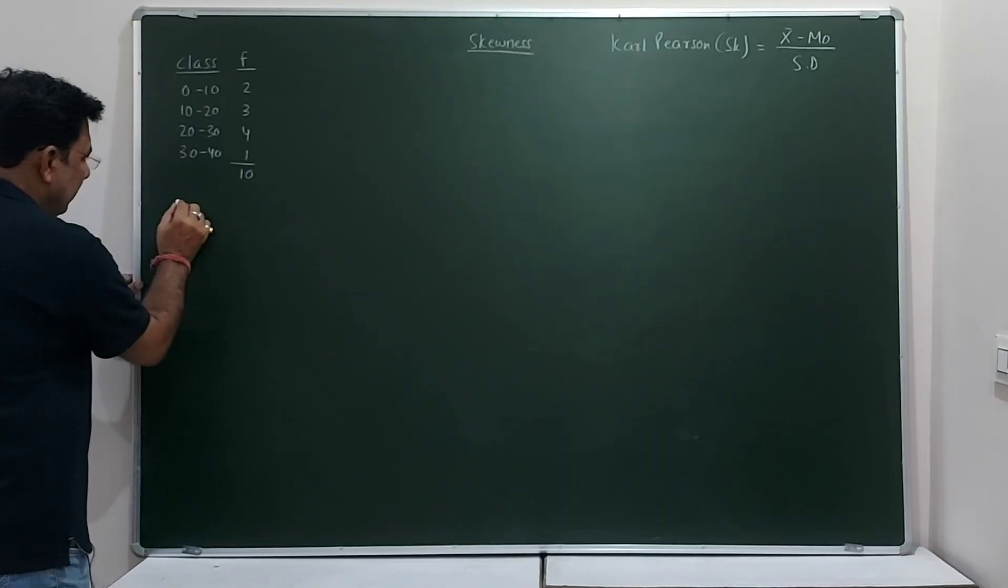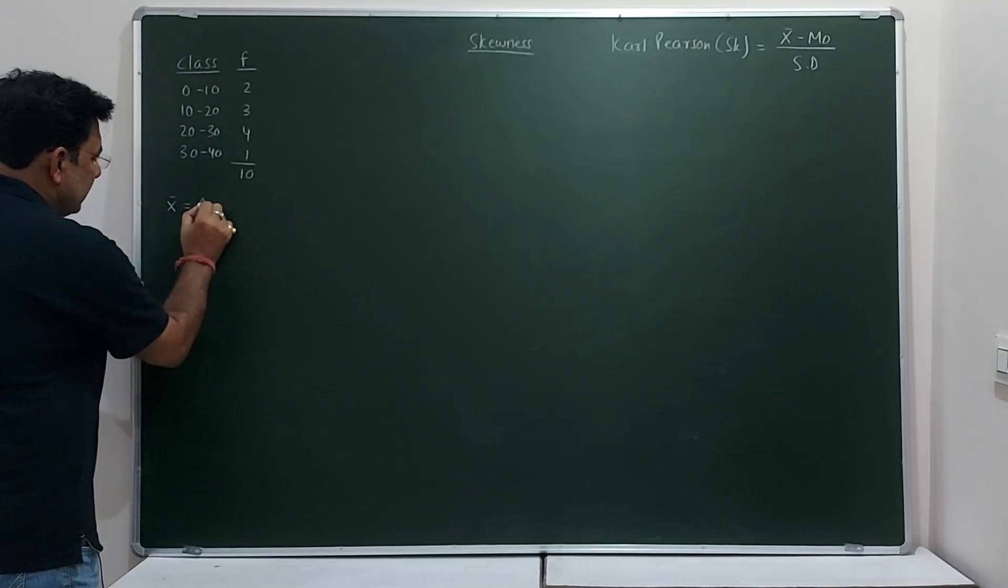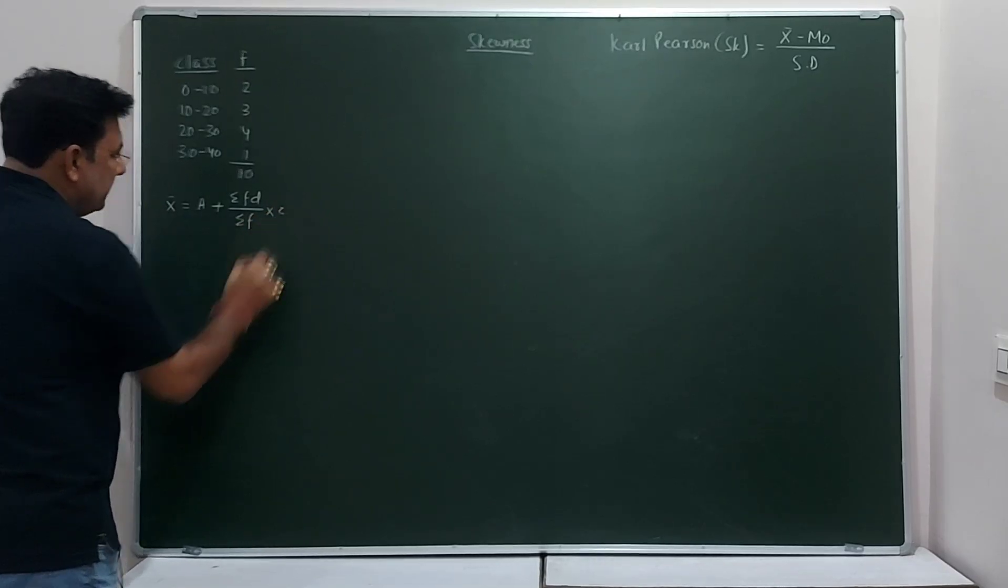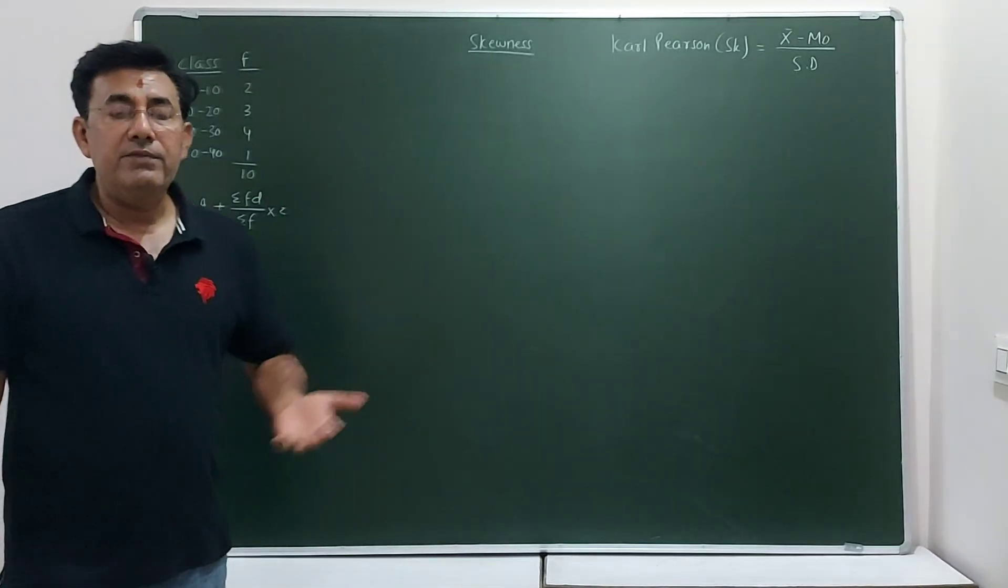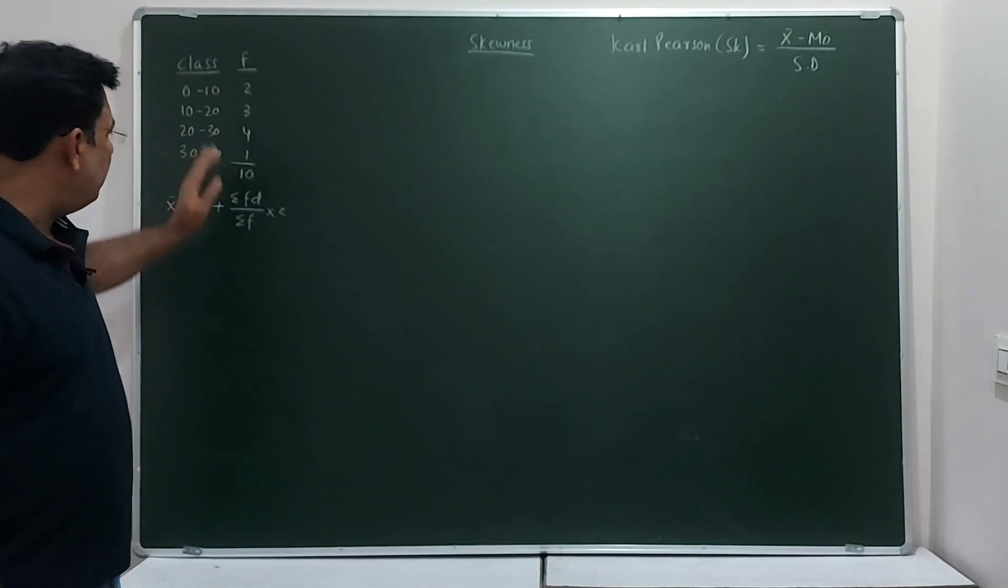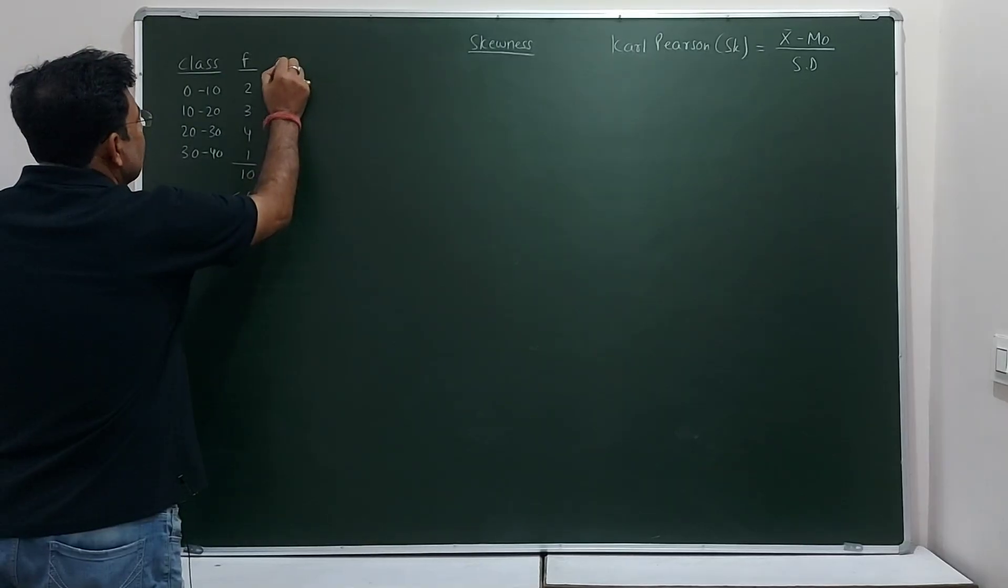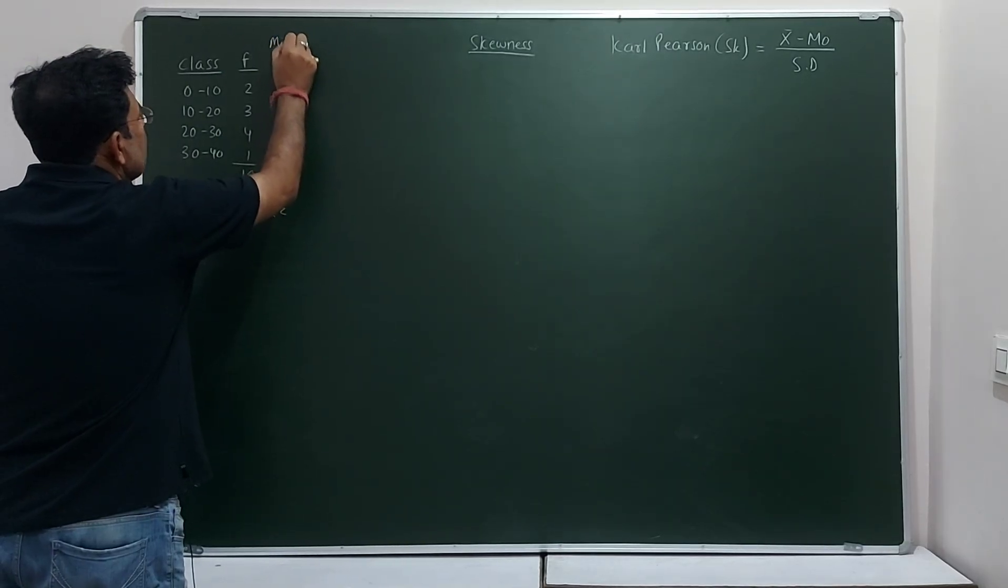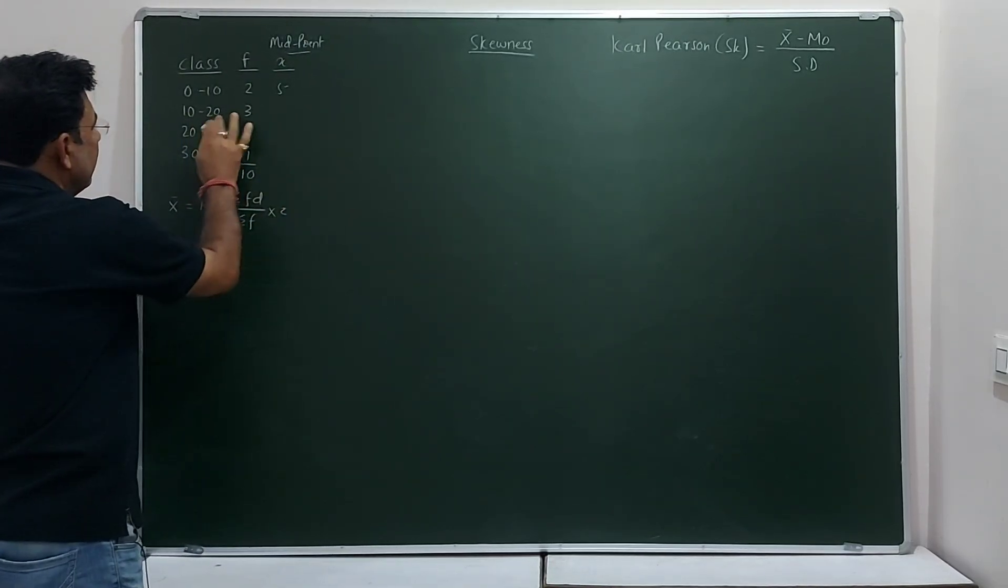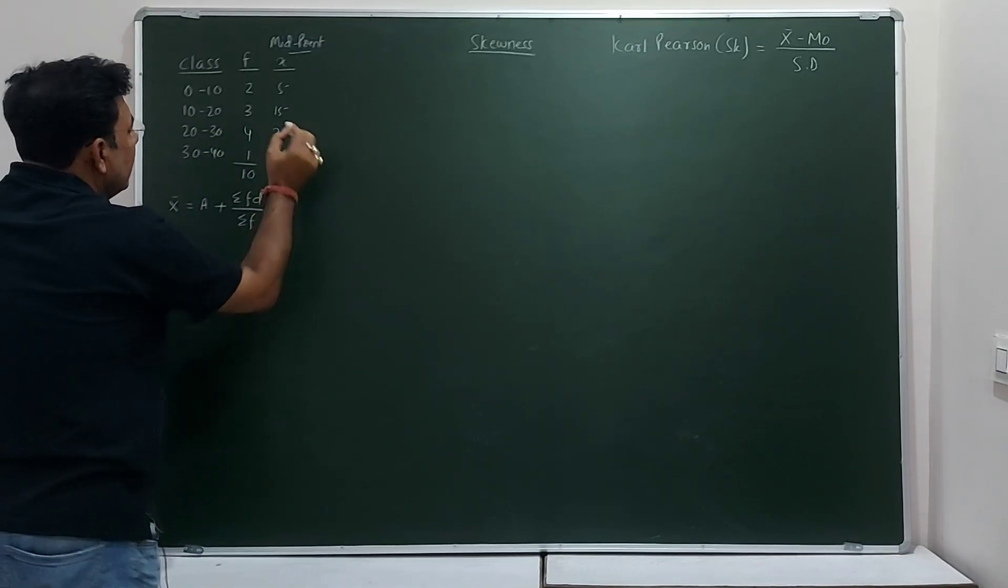Now to find mean, basically we use this formula. This is the symbol of mean x bar and this is the formula a + ΣfD/Σf × c. This is called step deviation formula of finding mean. Now to find this, we have to find out all these values from here. First of all, first find x. X is called the midpoint of the class. Midpoint of the class, that means 0 to 10, the midpoint is 5, 10 to 20, the midpoint is 15, here 25 and this is 35.